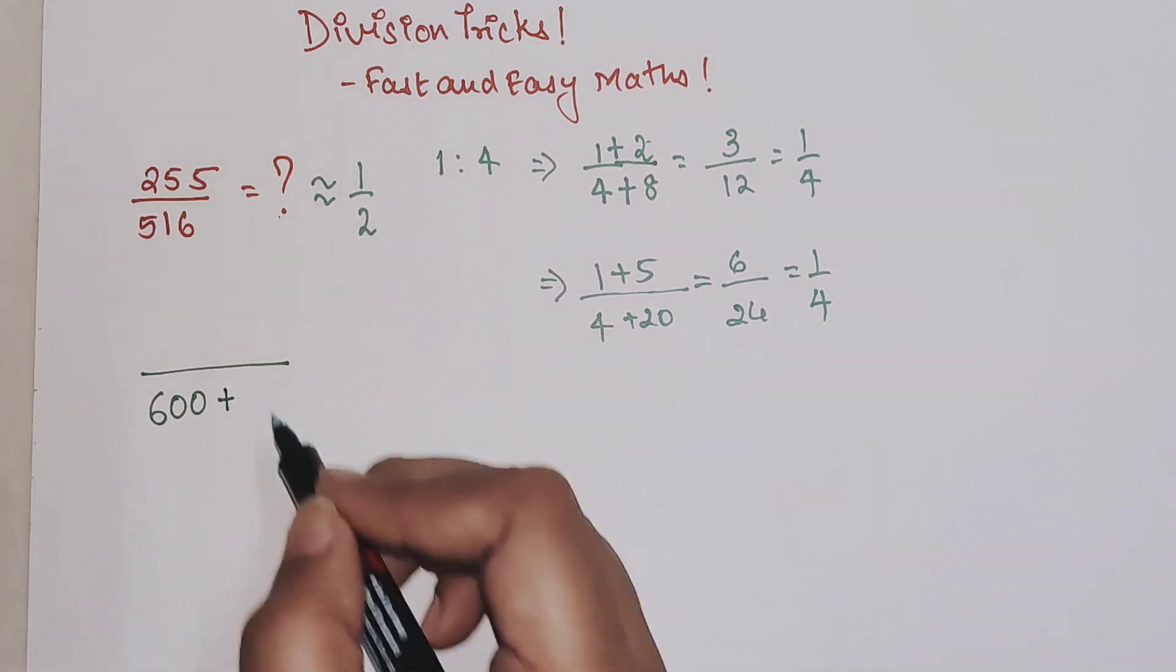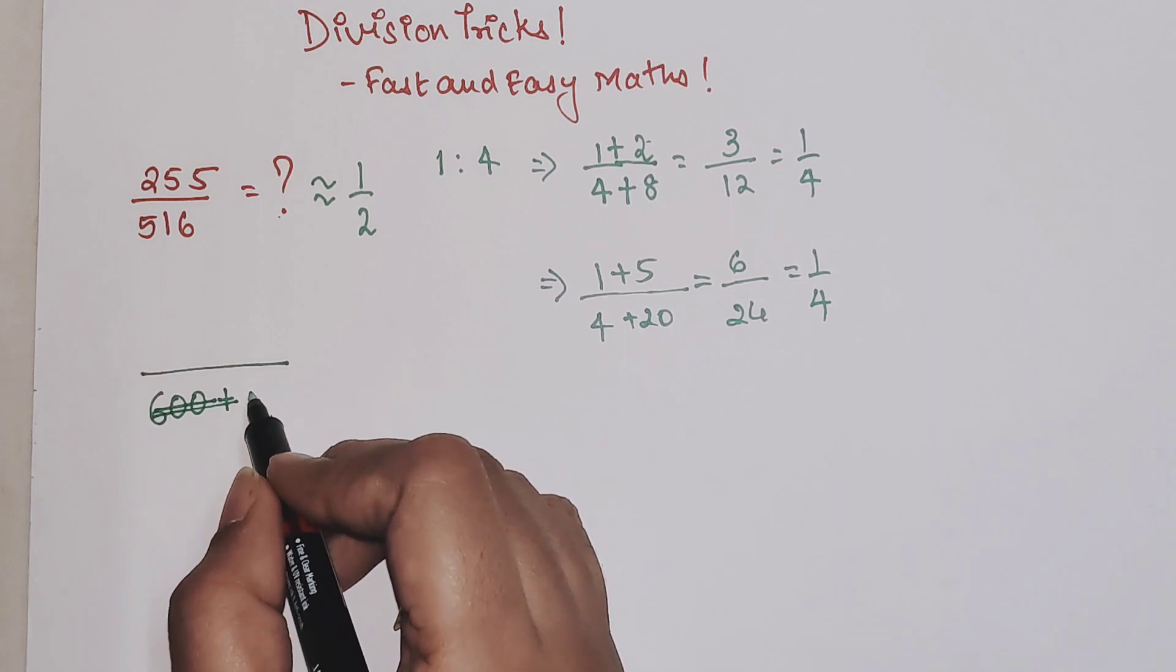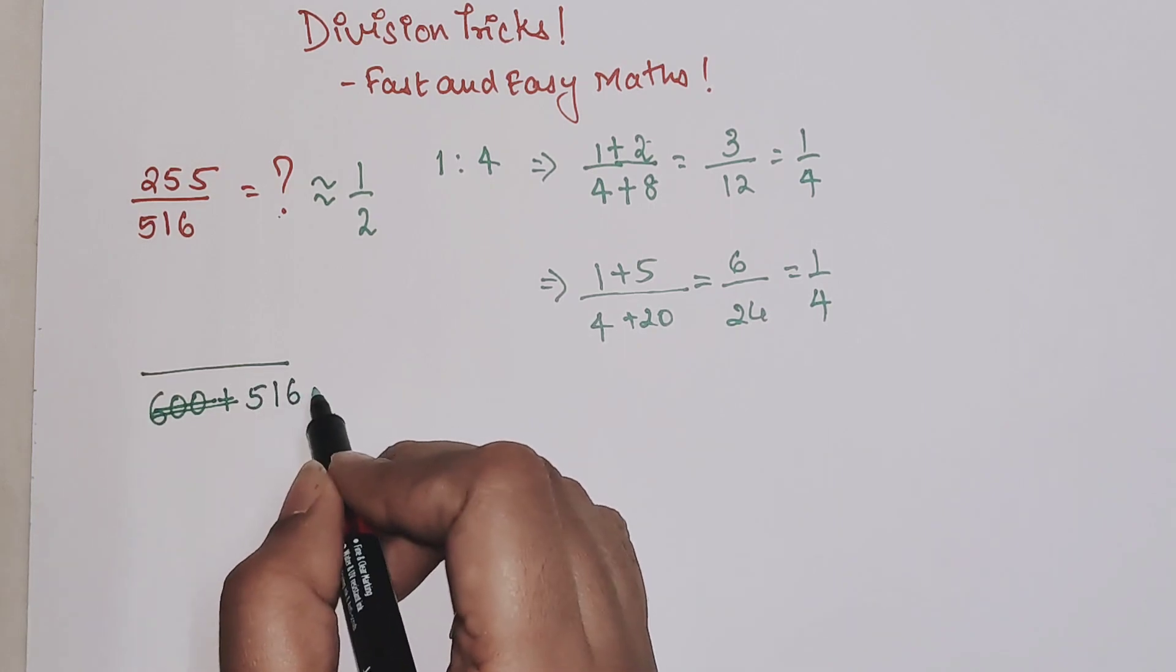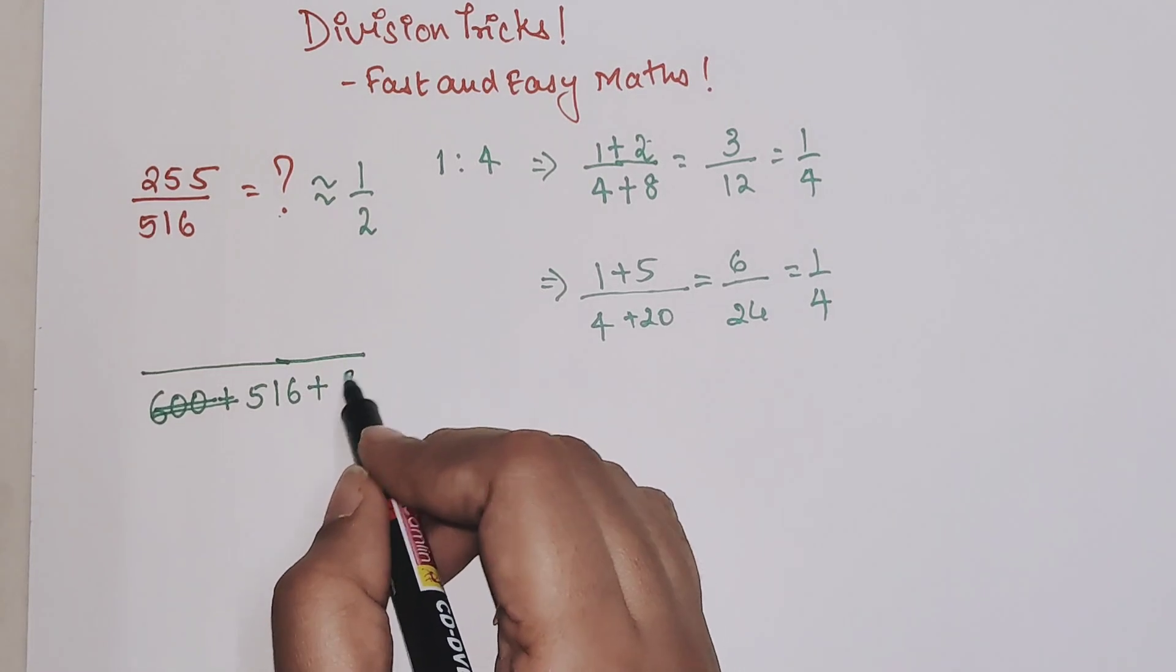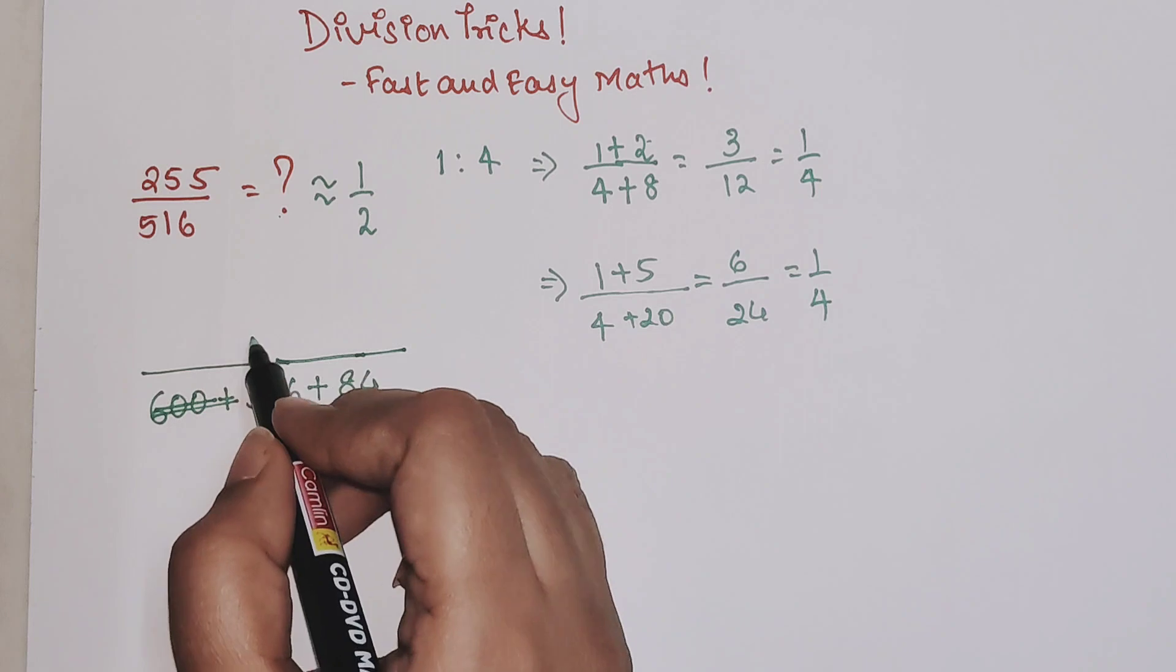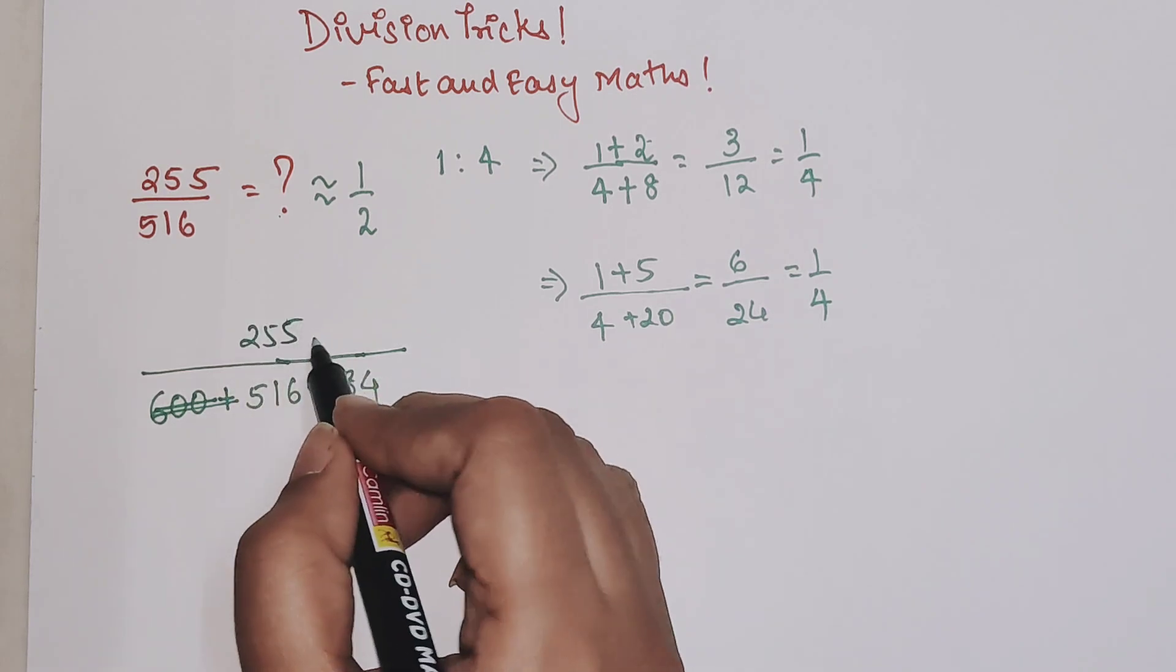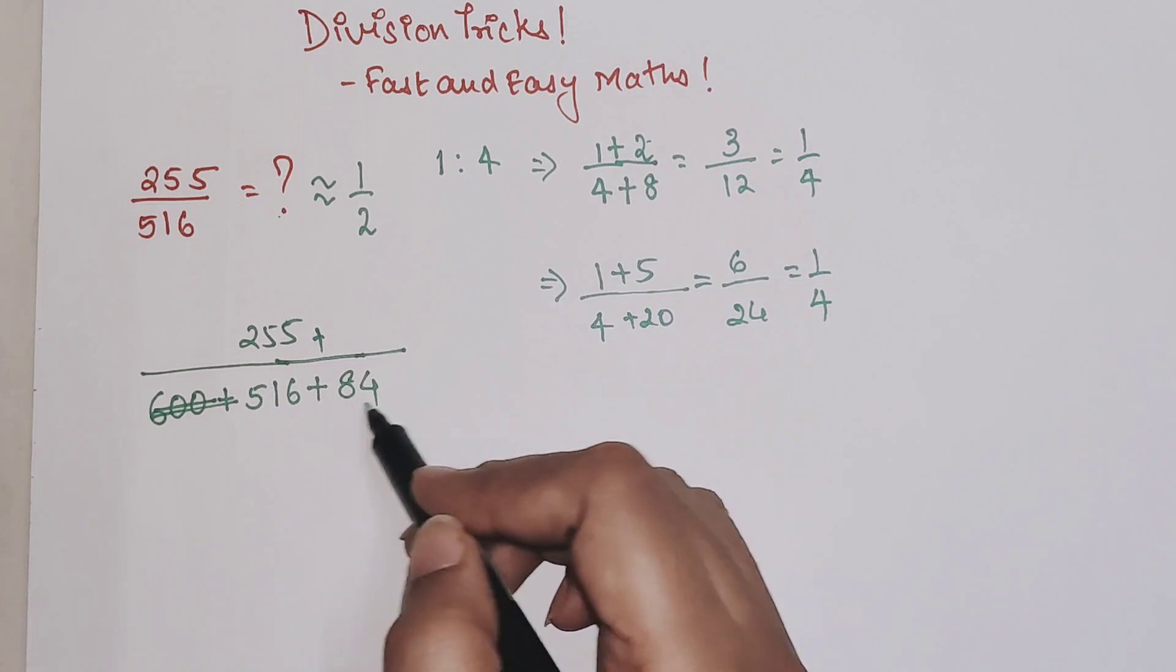If I want 516 to be made 600, then I need to add 84. Now if this is supposed to be added in the denominator, this is in the half ratio, so this has to be half of 84, which will be 42.